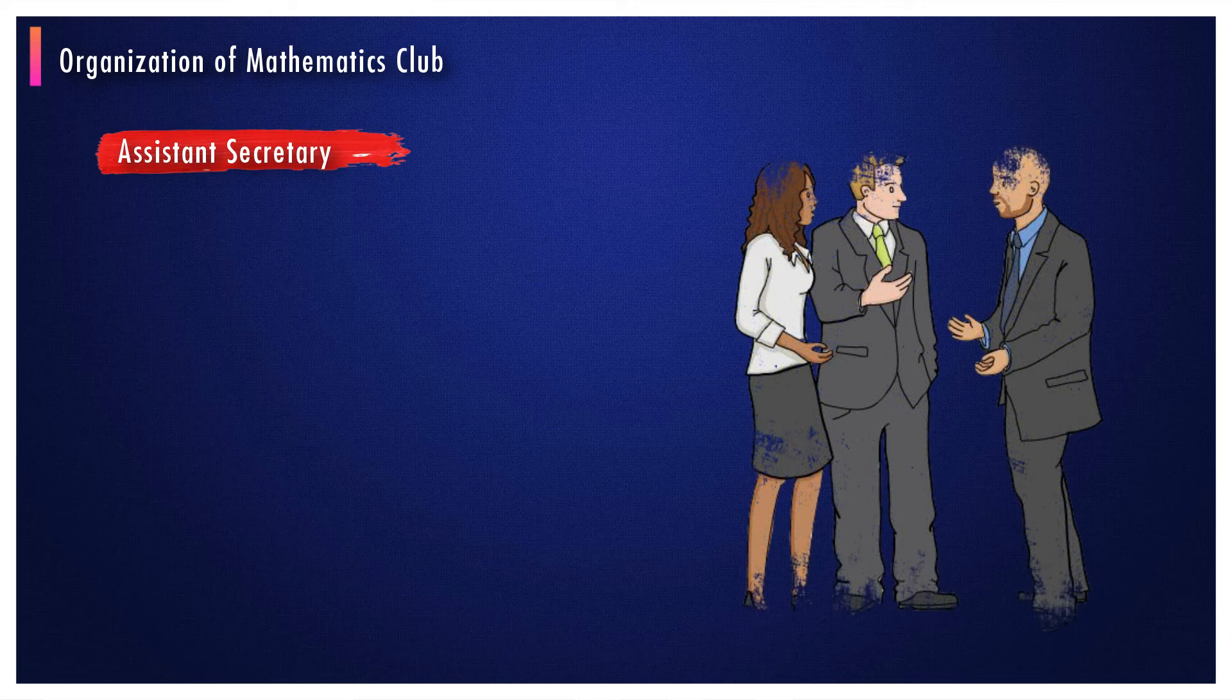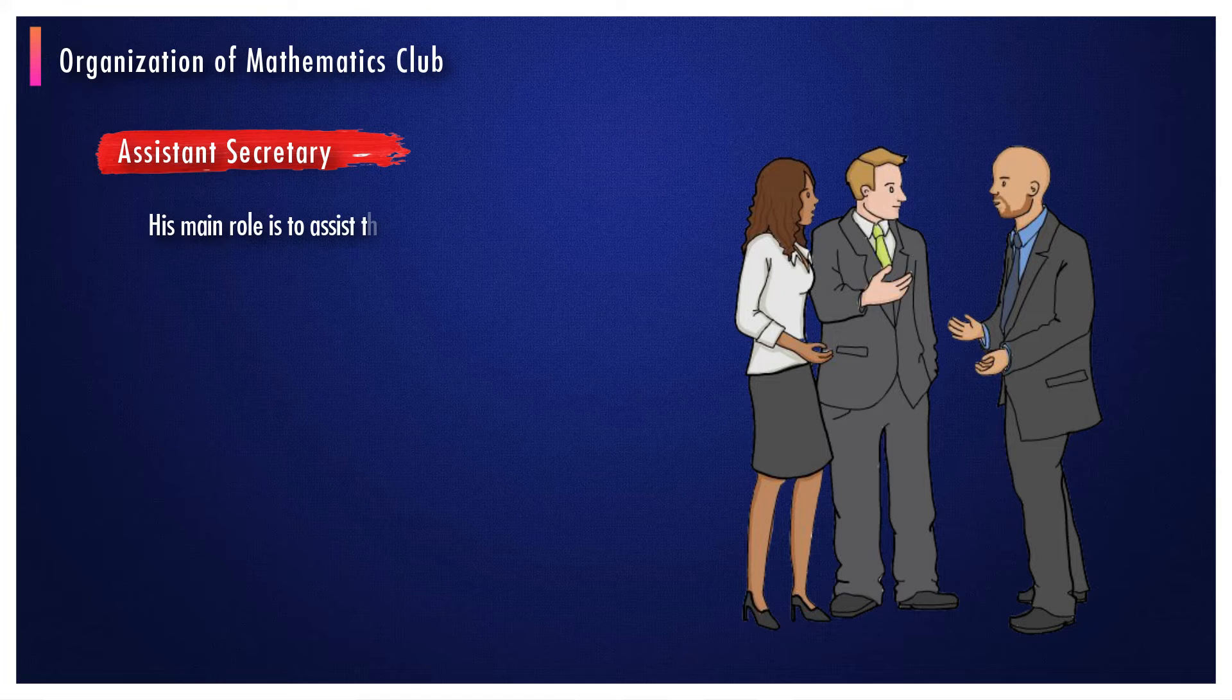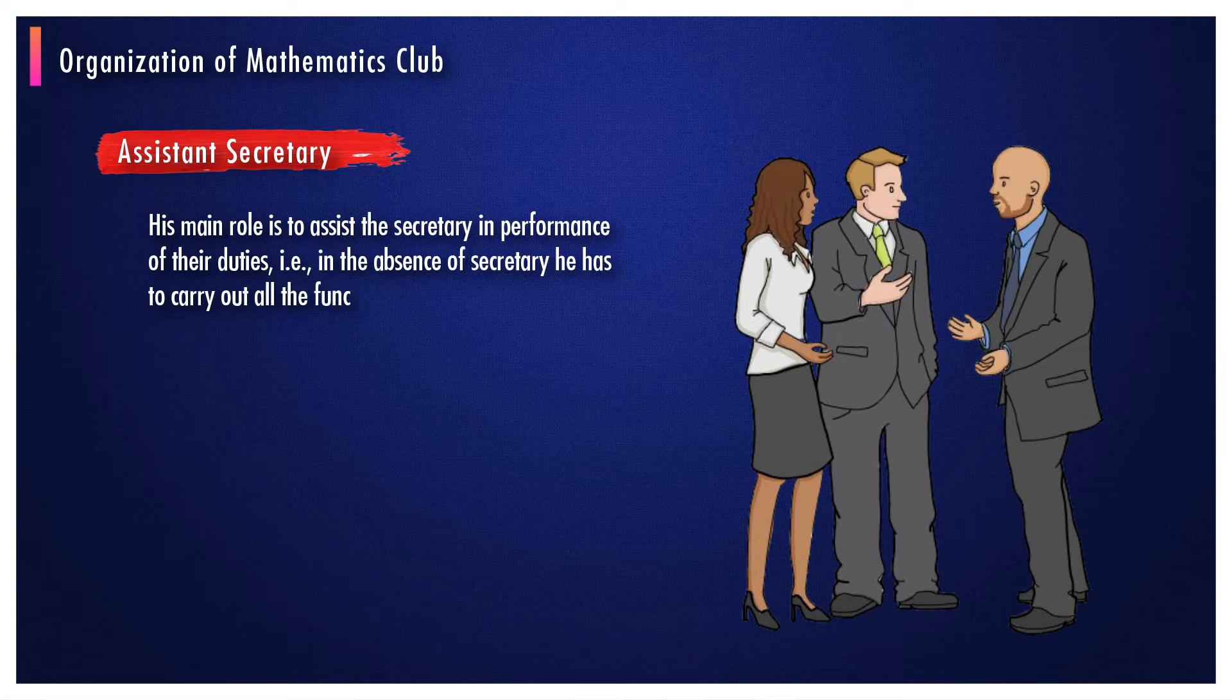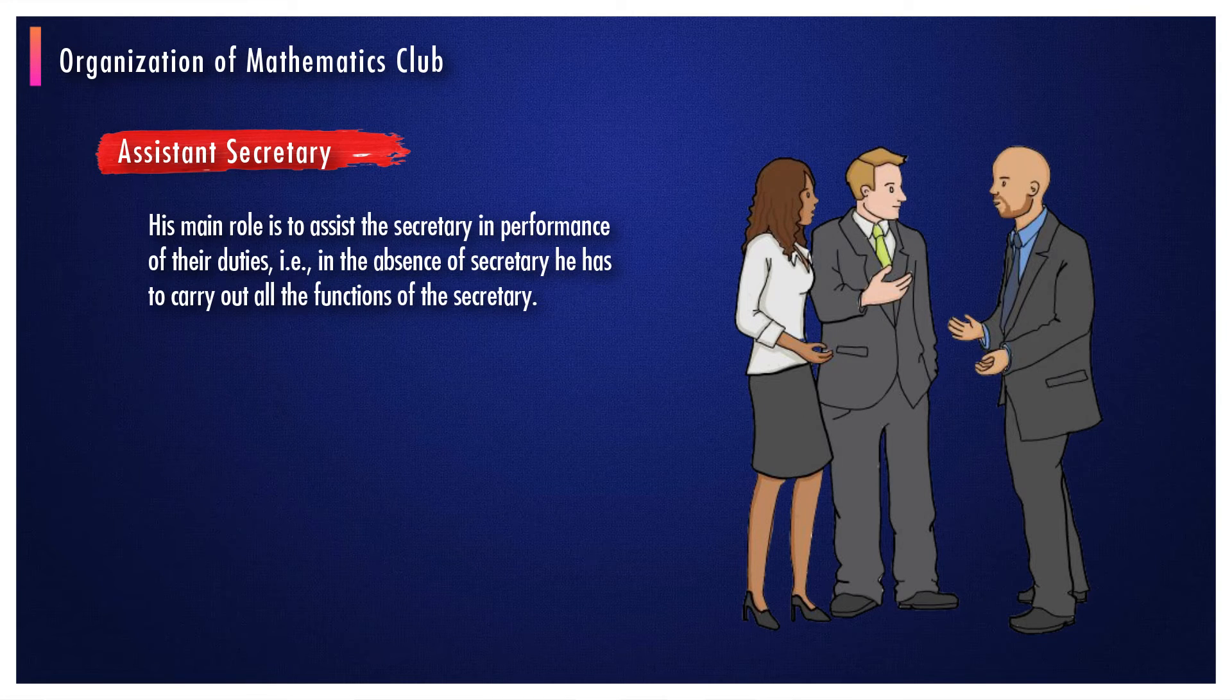The third one is assistant secretary. His main role is to assist the secretary in performance of their duties. That is, in the absence of secretary, he has to carry out all the functions of the secretary.